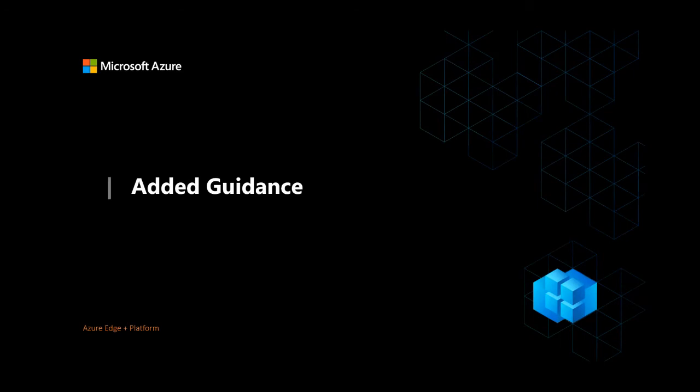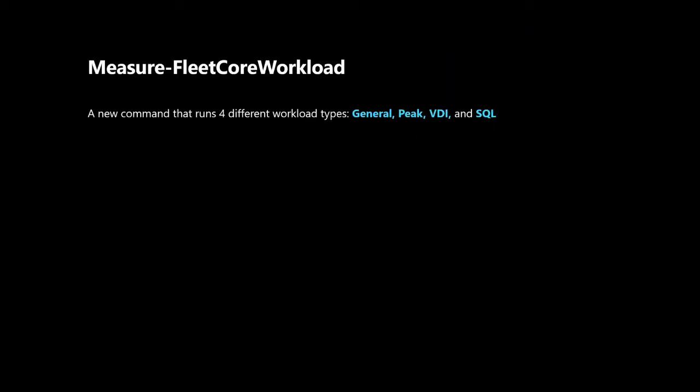In addition to these updates, there's one more update that deserves its own spotlight: the Measure-FleetCoreWorkload commandlet. Previously VMFleet provided relatively little guidance as to which parameters or flags to use to mimic certain workloads. This new command runs four predefined workloads: general, peak, VDI, and SQL. These workloads are defined using diskspd flags and stored as XML profiles. For general, peak, and VDI workloads, we deploy one VM per physical core, each containing one vCPU. SQL uses one-fourth of that VM count but each VM contains four vCPUs. After the test completes, it generates a zip file containing the IOPS results for each workload.